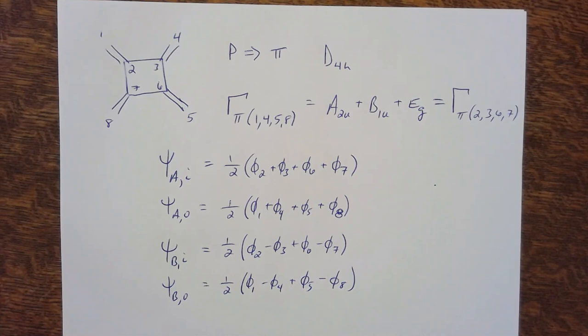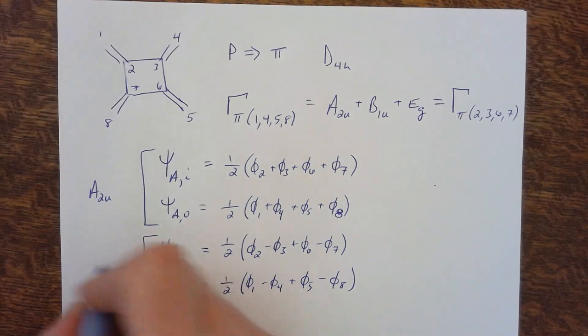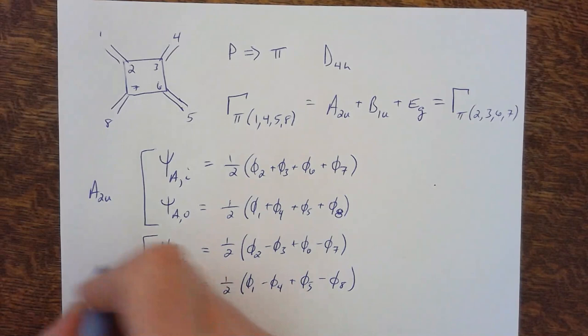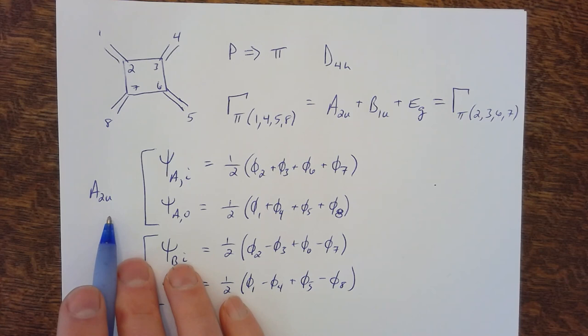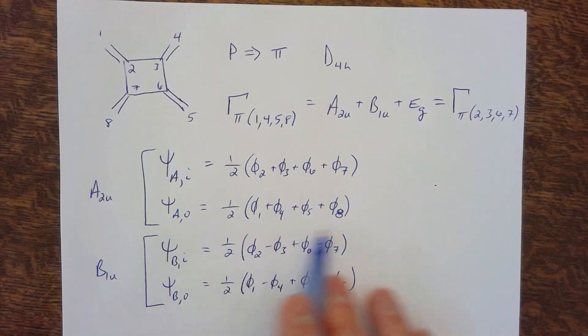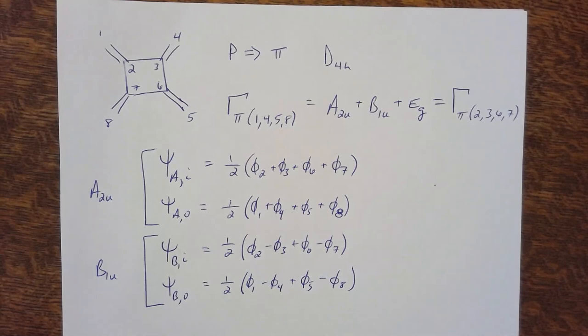Now we need to construct a determinant for each type of representation. Both of the A-type linear combinations belong to the A2U representation, and both B-type belong to B1U. As discussed last week, we can block the matrix according to symmetry representations and work with just the A2U or just the B1U linear combinations.